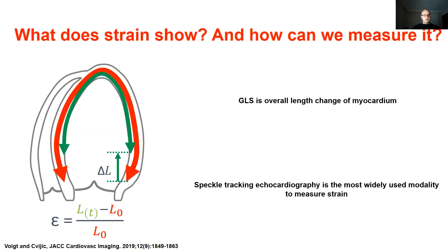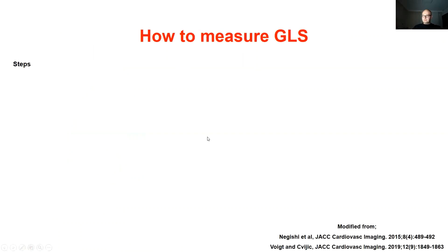There are softwares which require manual corrections, or it can be fully automatic. It does not need dedicated image acquisition like tissue Doppler. However, it has lower temporal resolution than tissue Doppler imaging and is affected by 2D image quality. It also shows substantial differences among vendors and is highly affected by post-processing algorithms.